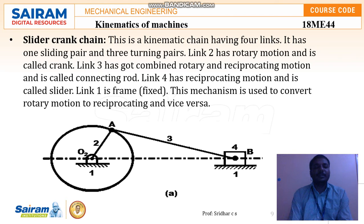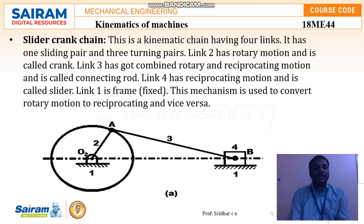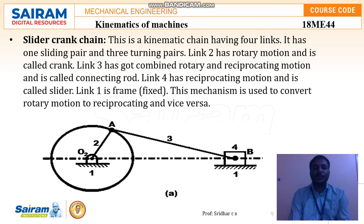Next we will see the slider crank mechanism. This is a kinematic chain bearing four links — one sliding pair and three turning pairs. In this chain there are four links: one link moves in sliding and the remaining three are turning pairs. Link two has rotary motion — that is the crank. Link three has combined rotary and reciprocating motion — that is the connecting rod. Link four has reciprocating motion — that is the slider. Link one is the fixed frame. This mechanism converts rotary to reciprocating or reciprocating to rotary motion.